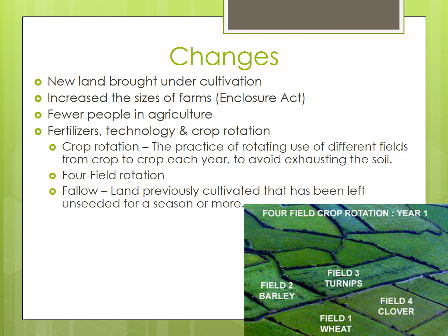The second agricultural revolution saw agricultural activities shift toward making profit — what we will call commercial agriculture — away from more subsistence forms of agriculture. So farmers began to increase their investments to try and maximize the output from their farms, which led to increased agricultural productivity.